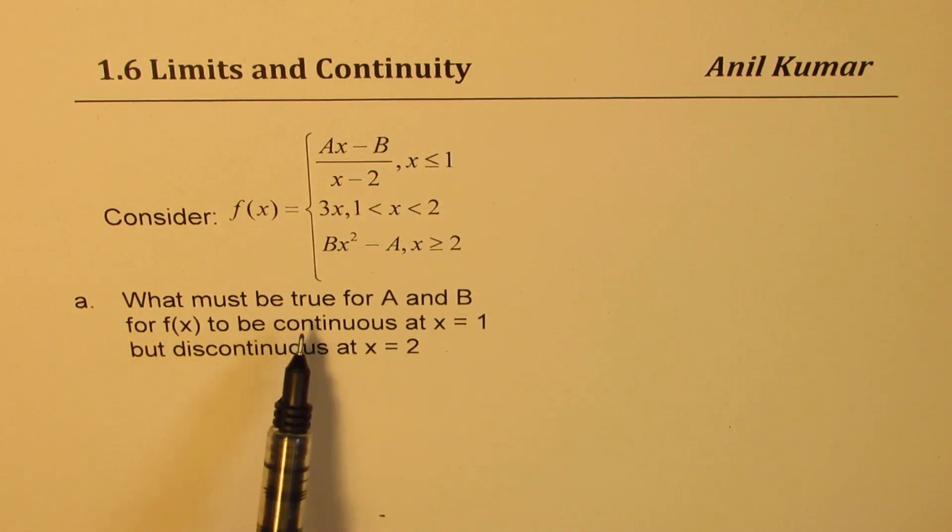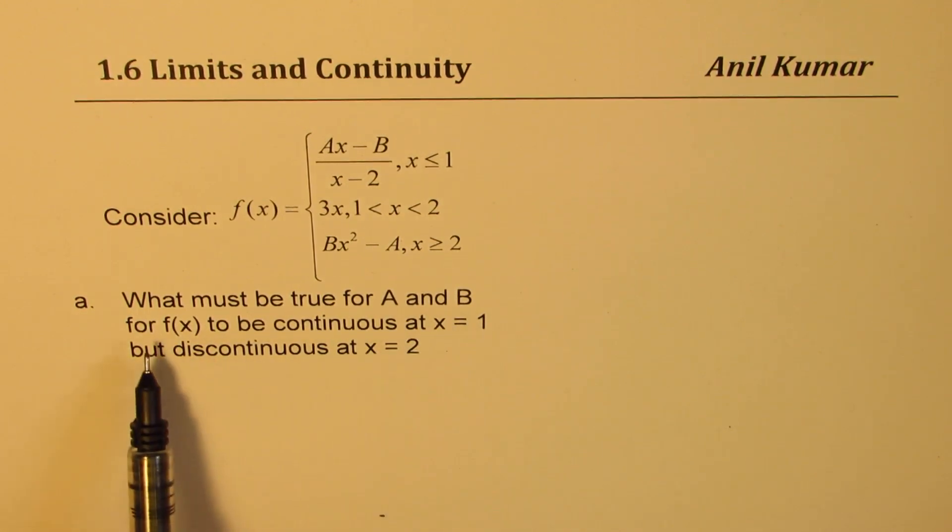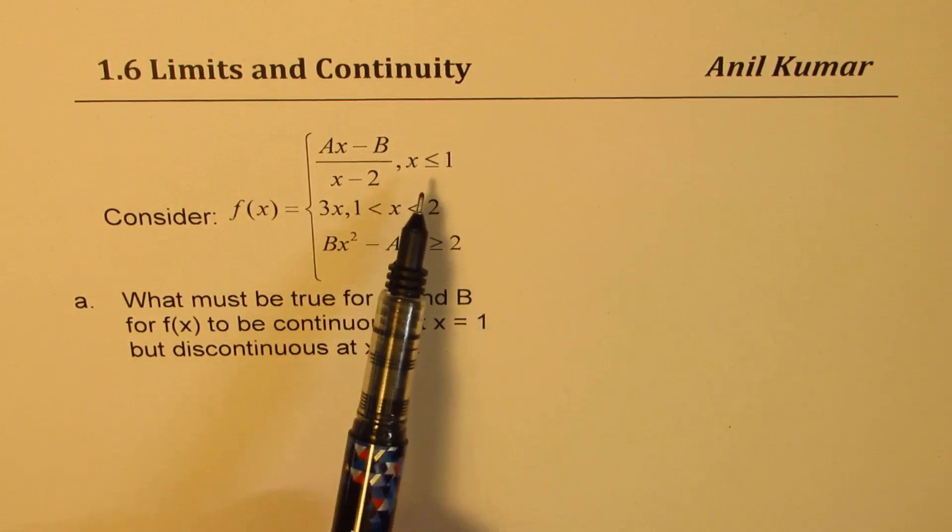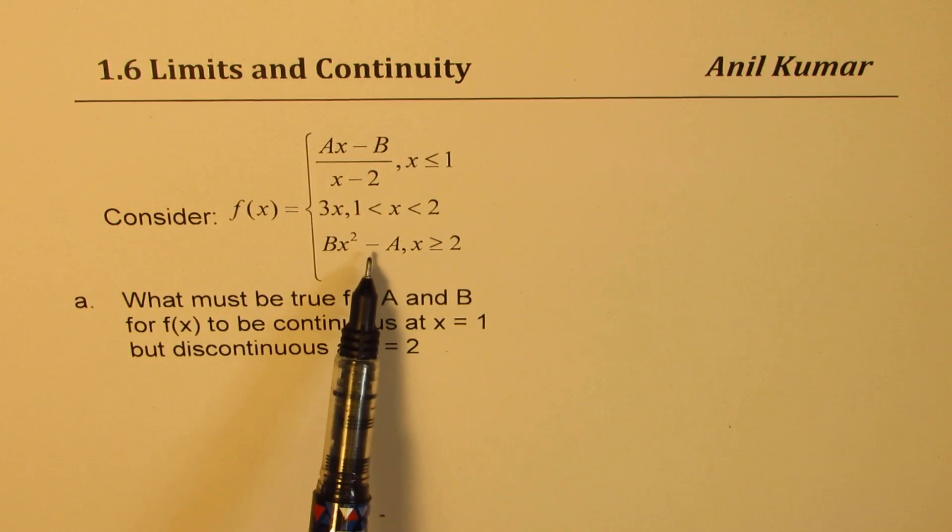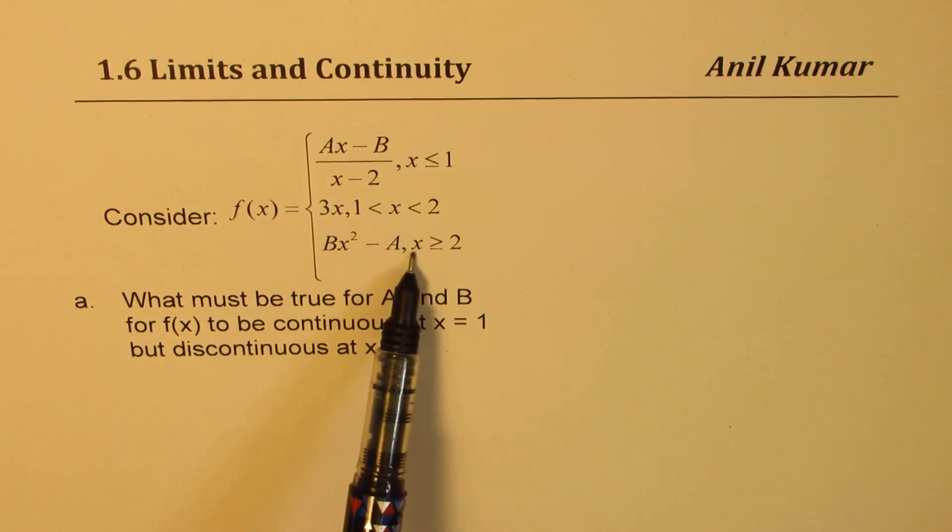What must be true for A and B for f(x) to be continuous at x equals 1 but discontinuous at x equals 2? So we need continuous at x equals 1 but discontinuous at x equals 2.